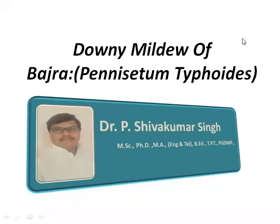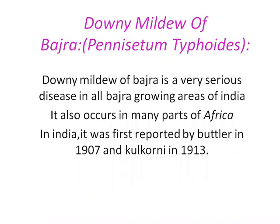Downy Mildew of Bajra. The formal name of Bajra is Pennisetum typhoides. This Downy Mildew of Bajra is a very serious disease in all Bajra-growing areas of India. It also occurs in many parts of Africa and India.